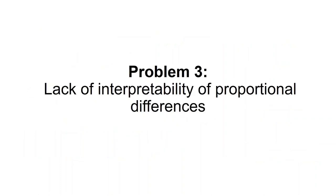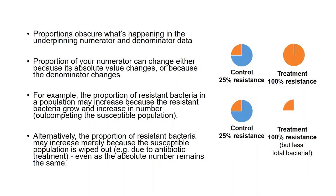And the final problem that I want to highlight is the lack of interpretability of proportional differences in meta-analyses. So by their very nature, proportions obscure what is happening in the underpinning numerator and denominator data. So the proportion of your numerator can change either because its absolute value changes or because the proportion of the corresponding denominator changes. So, for example, the proportion of resistant bacteria in a population may increase because the resistant bacteria grow and increase in number. Or alternatively, the proportion may increase because the absolute value of the denominator decreases.